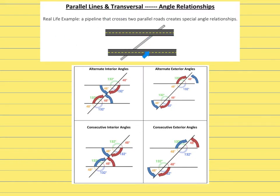An example would be roads. When they construct roads, they make them parallel sometimes. A water line or a pipe was running underneath it — it could intersect those two roads underneath the ground, forming these angle relationships.